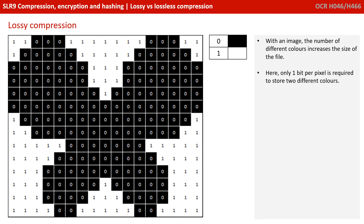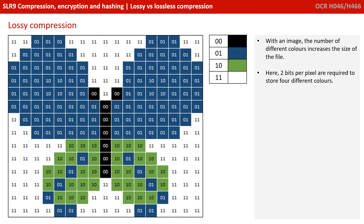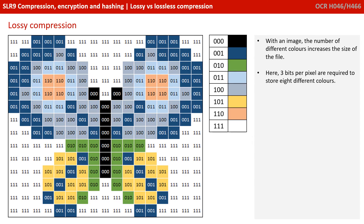Let's start by looking at an image. With an image, the number of different colours increases the size of the file. We only need one bit per pixel to store two different colours, because a zero can represent black and one can represent white. We see we're now requiring two bits for each pixel to store four different colours, and three bits for every pixel to store one of eight possible colours. This is known as the colour depth.